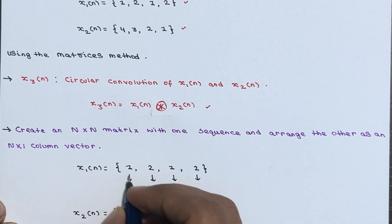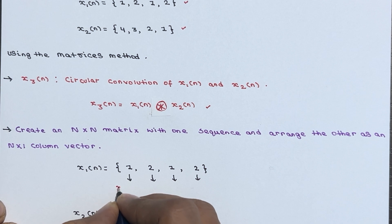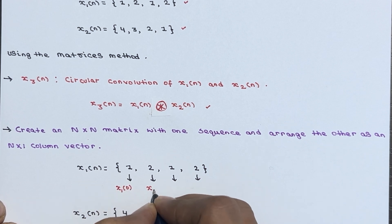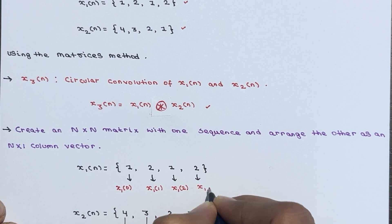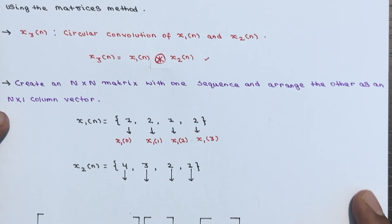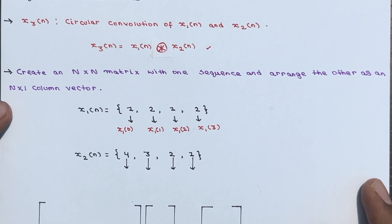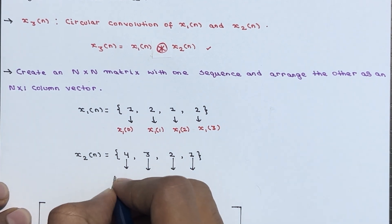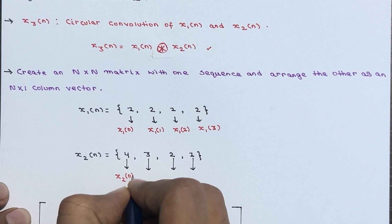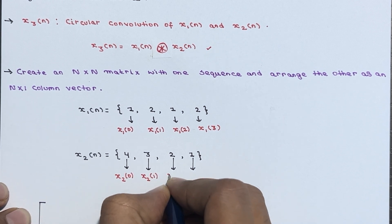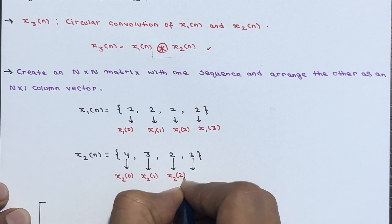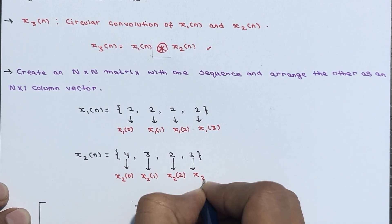So x1[n] has elements: x1[0], x1[1], x1[2], and x1[3]. Similarly for x2[n], we have: x2[0], x2[1], x2[2], and x2[3].